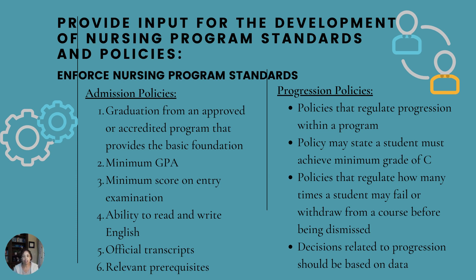We should also ensure there is evaluation of the admission, progression, and graduation policies and procedures. This is going to help us explore relationships between our policies, our practices, and whether or not they had an impact on student outcomes. We want to ensure that the criteria aligns with any missions or goals the university has, especially for admissions. For example, if there's a specific recruitment effort to diversify your student population, you want to see if your marketing message is aligned with that — ensuring the face of the program really looks like the type of student you are trying to attract.